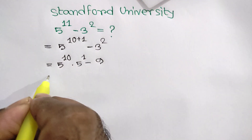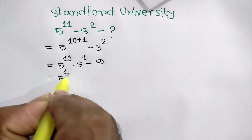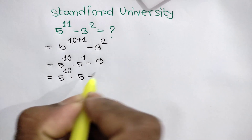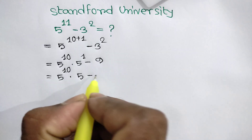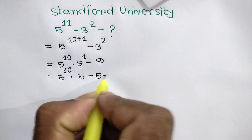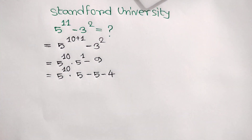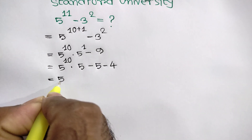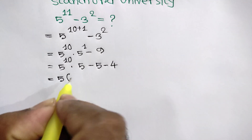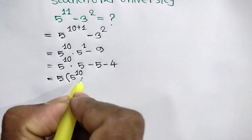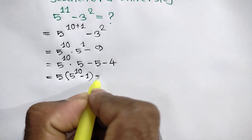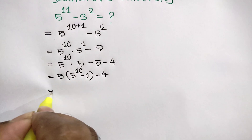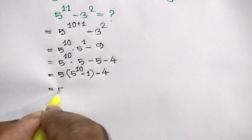This equals 5 to the power 10 times 5, and we know 5 to the power 1 is 5. The negative 9 can be written as negative 5 and negative 4. Taking out the factor 5, we get 5 times the quantity 5 to the power 10 minus 1, and this negative 4 remains.